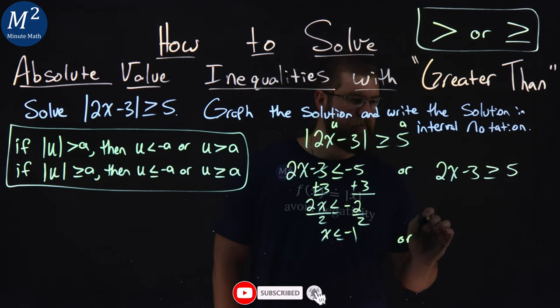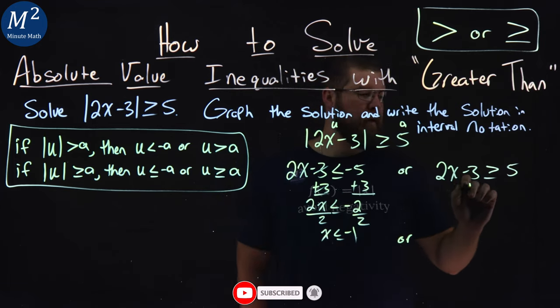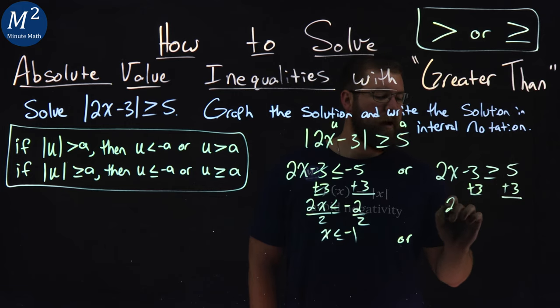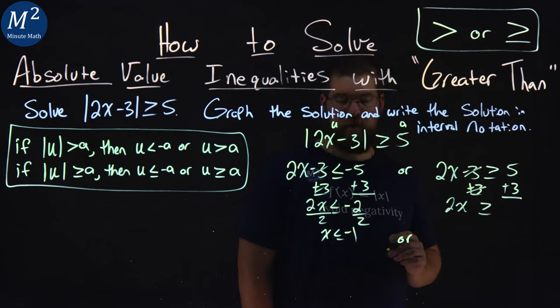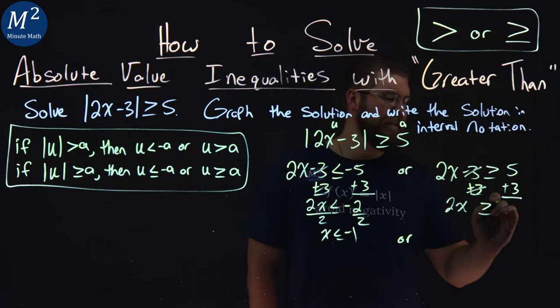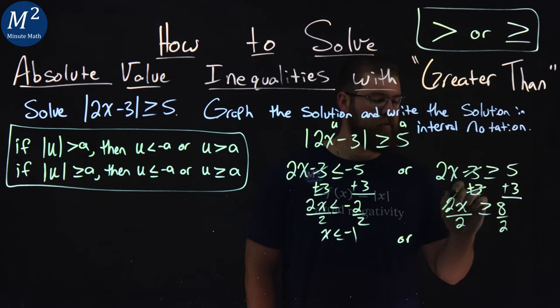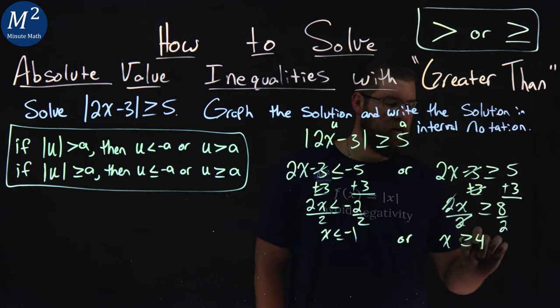Or, second part, same idea. Add 3 to both sides. 2x is greater than or equal to—the negative 3 and positive 3 cancel out—5 plus 3 is 8. Divide both sides by 2. The 2s cancel, and x is greater than or equal to 8 over 2, which is 4.